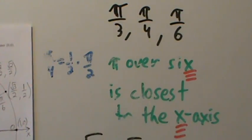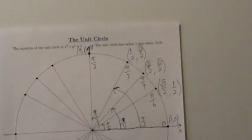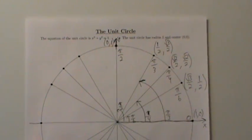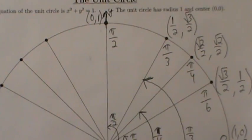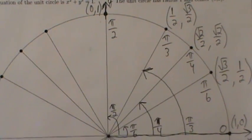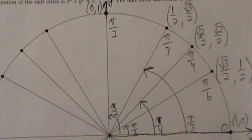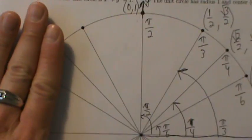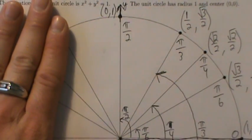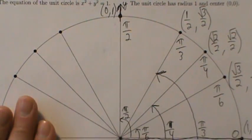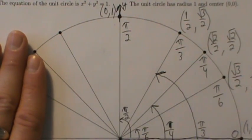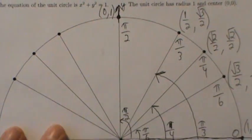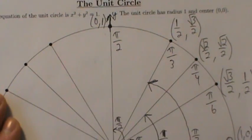Okay, so once you have that first quadrant down, getting the rest is really straightforward. We're going to use the symmetry properties. Let's fill in the coordinates of the other points first, then we'll talk about the angles. There's a little trick for the angles too.